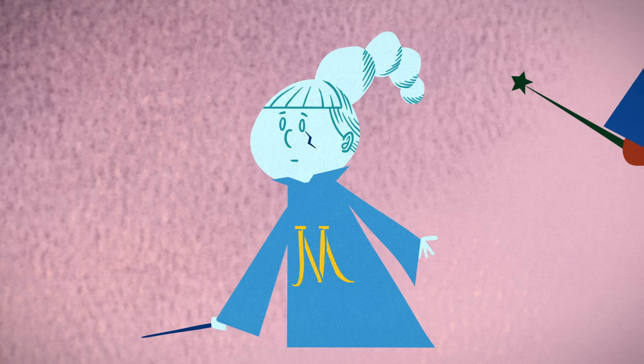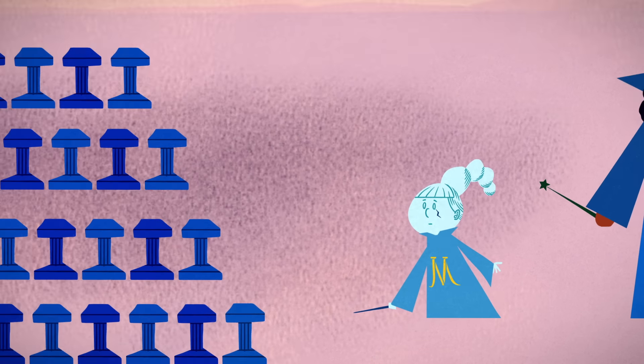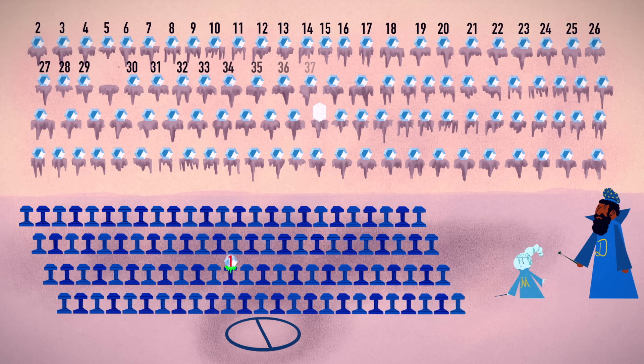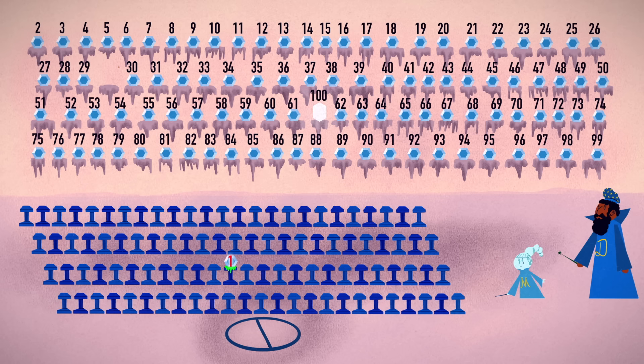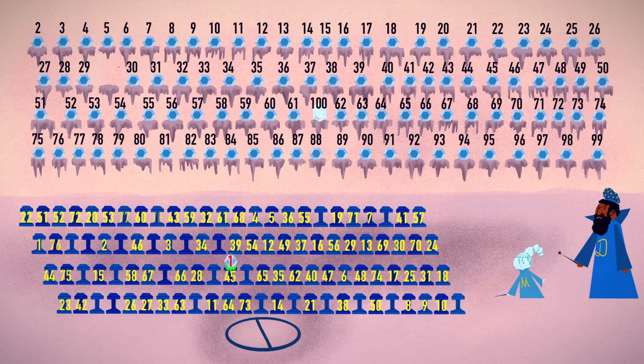Let's imagine we knew everything about this situation. With perfect knowledge, we could label the stones 1 to 100 based on the order we planned to place them, and label the platforms they belong on in the same way.